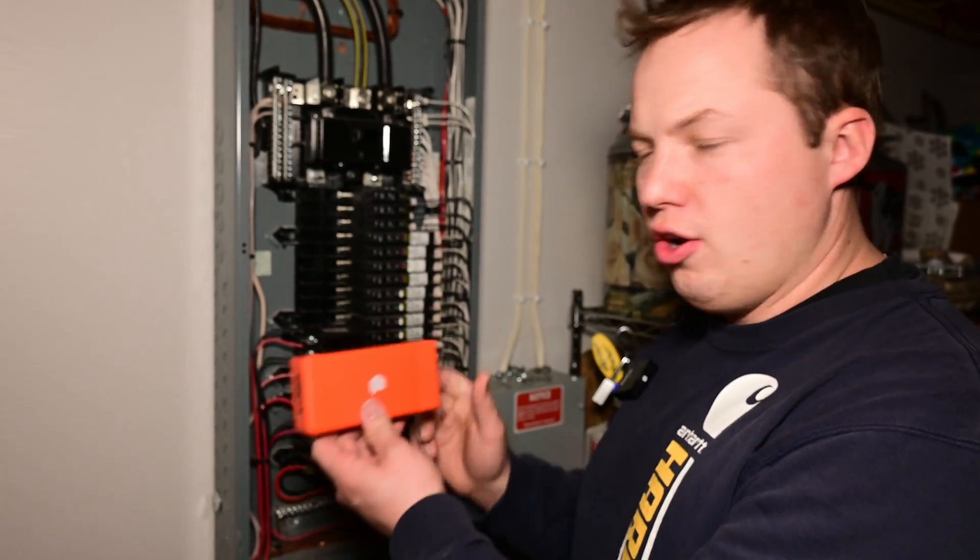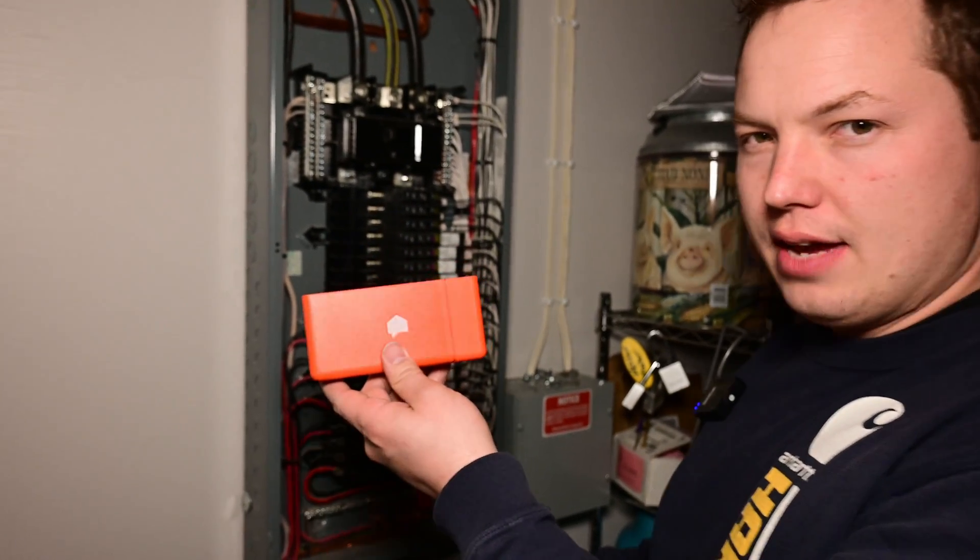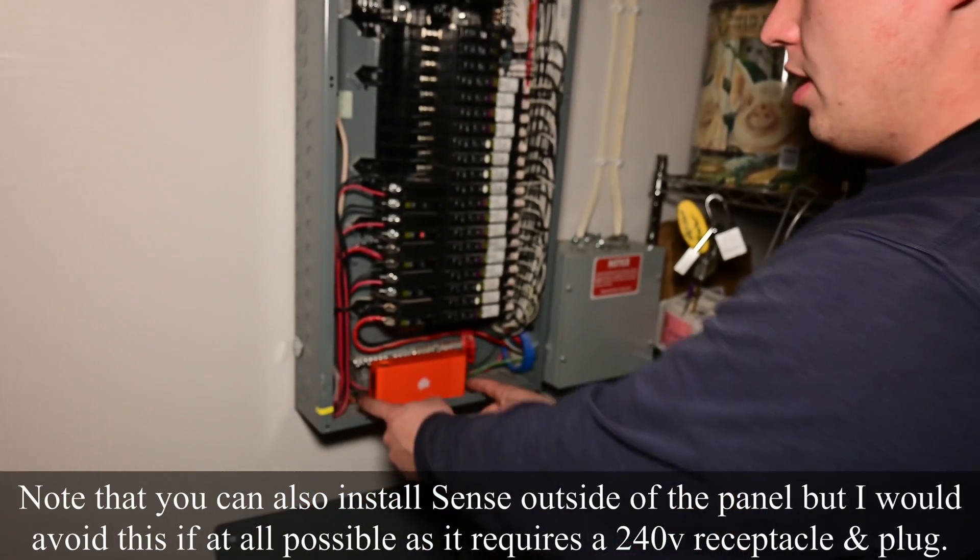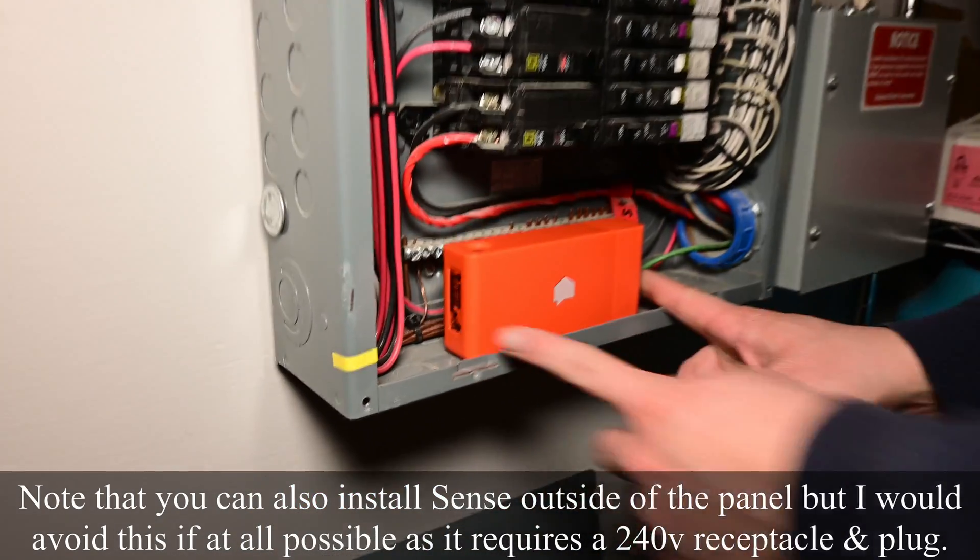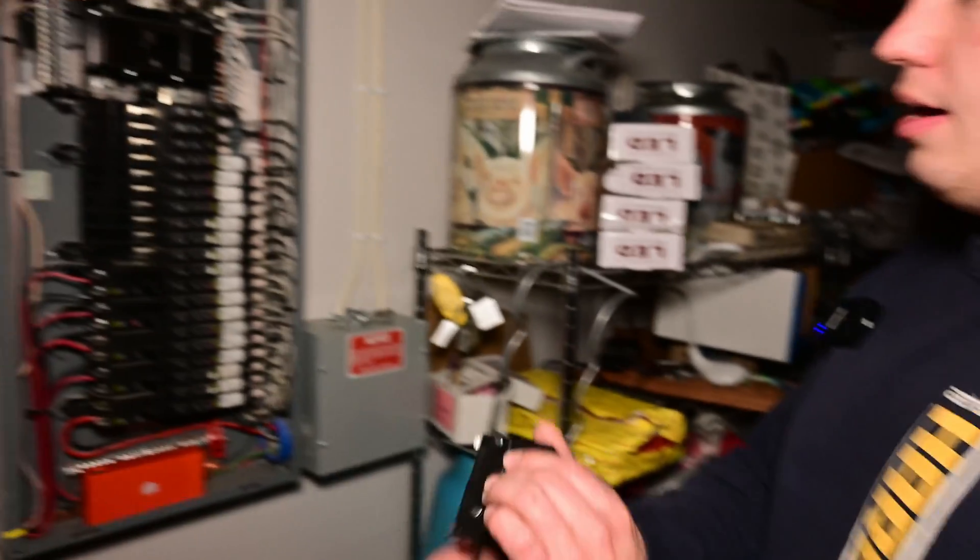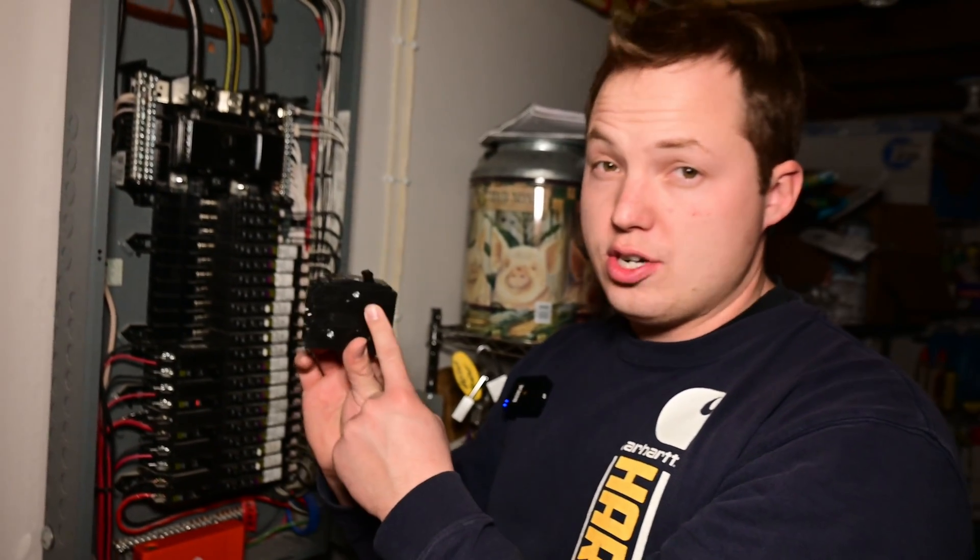You're going to want to find an open spot or an empty place where you can set the sense energy monitor inside of your panel. Typically the best spot is going to be right down near the bottom, so we're just going to place that there. That's where we're going to be working from and bringing all of our wires to. Now we're going to get the breaker set up for where we're going to be powering our sense energy monitor from.